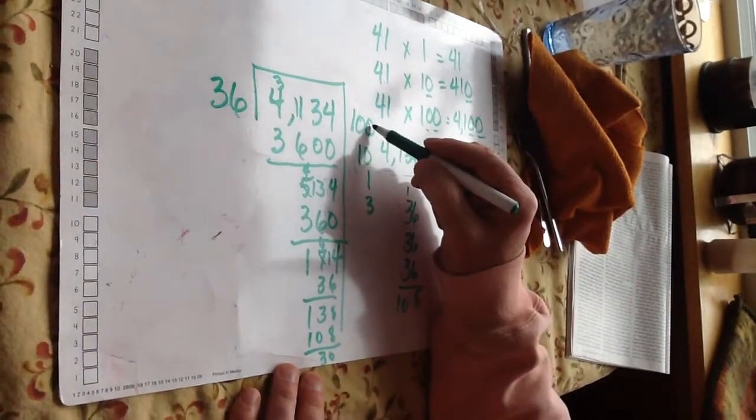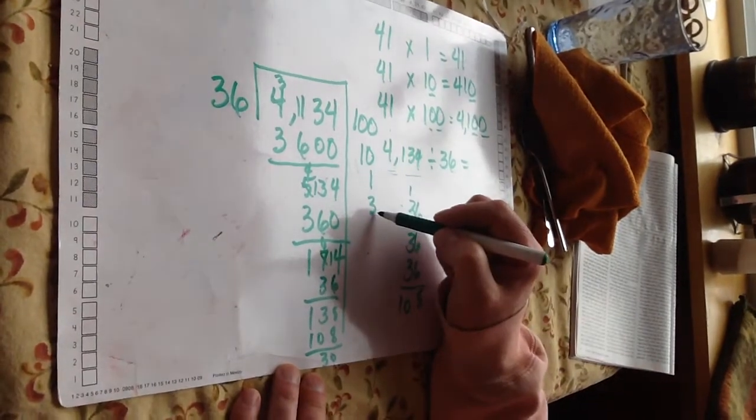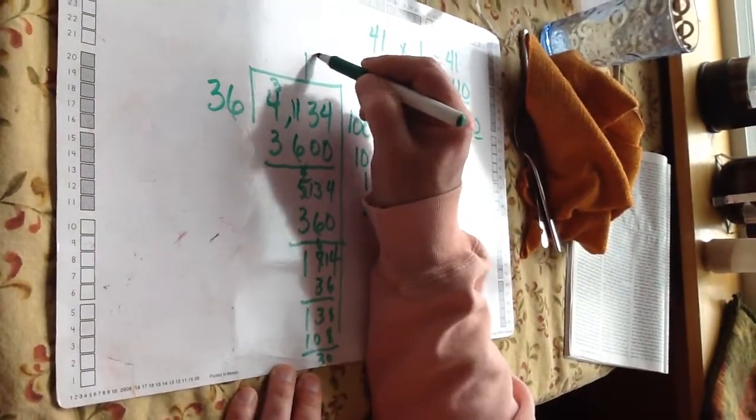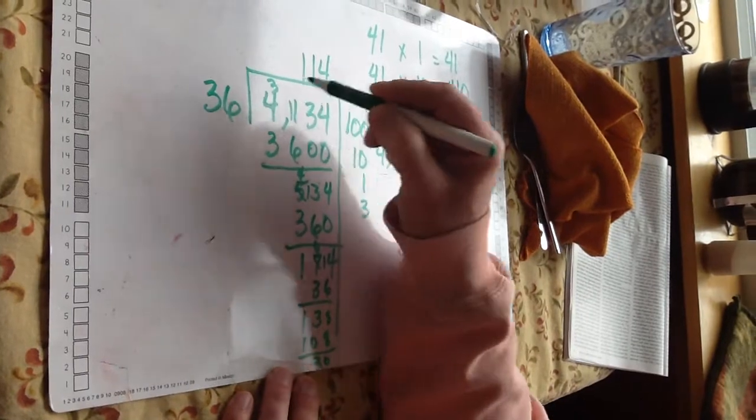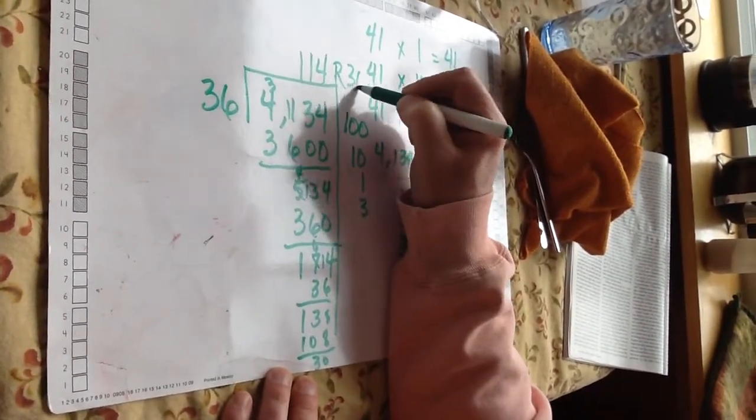I have 100 plus 10 plus 4 more groups. 114 groups of 36 with a remainder of 30. That's my answer.